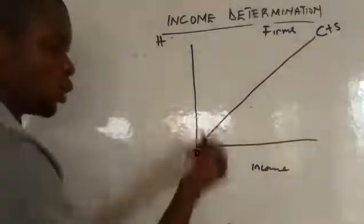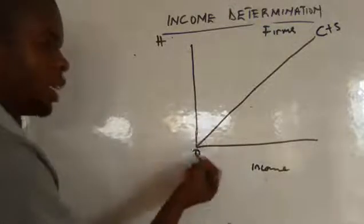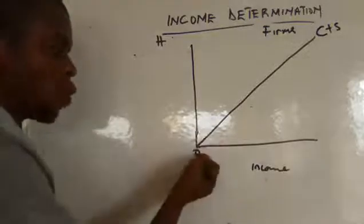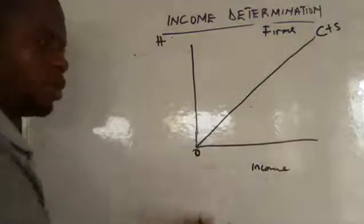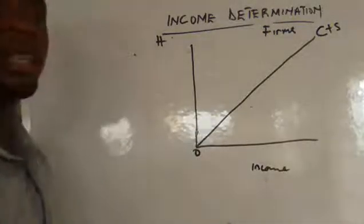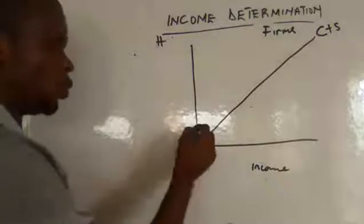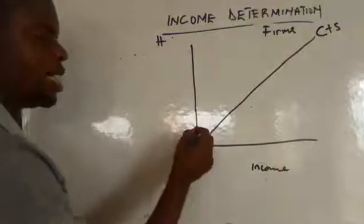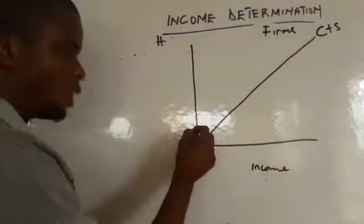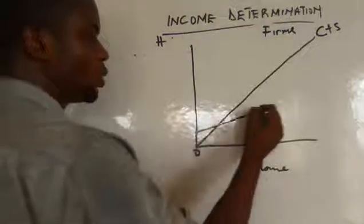Our consumption function starts above the origin because of autonomous consumption — it starts even when income is zero, because man needs to live even when he has no income. That is why we have the intercept of consumption above zero, and it continues growing as income increases.